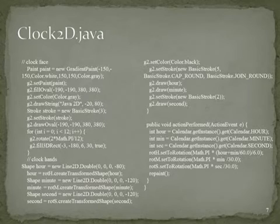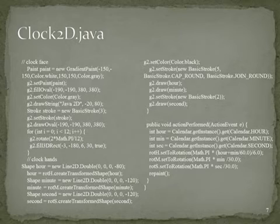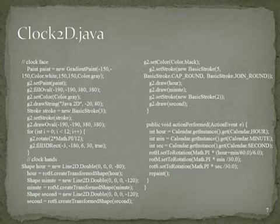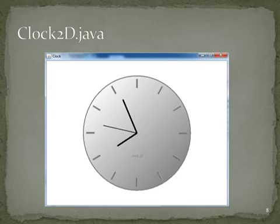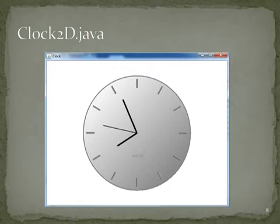Responding to the action event generated by the Timer, the actionPerformed method implements the animation function. It uses the Calendar class to get the current system time and set the appropriate angle for the three rotations. After the rotations are updated, a repaint method call is made to update the display. Here is the output of a real analog clock. We can run the previous code in NetBeans to see how the clock will be animated.